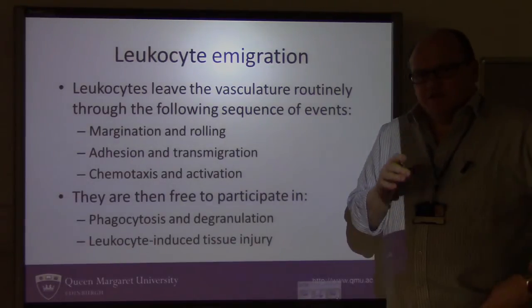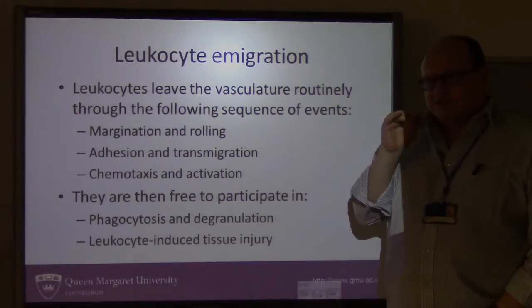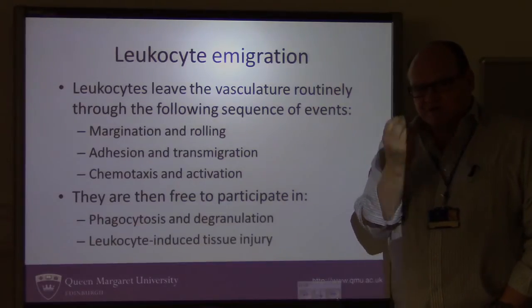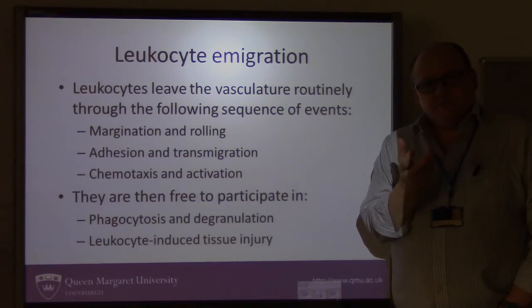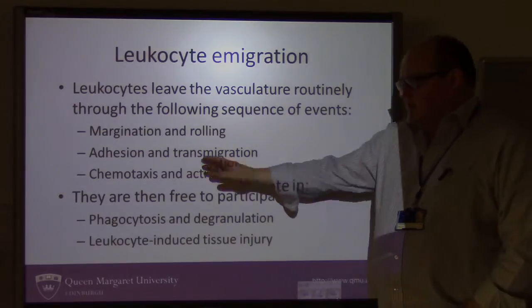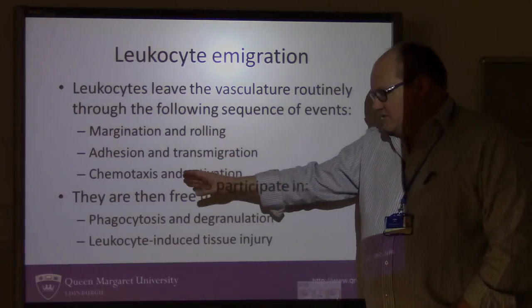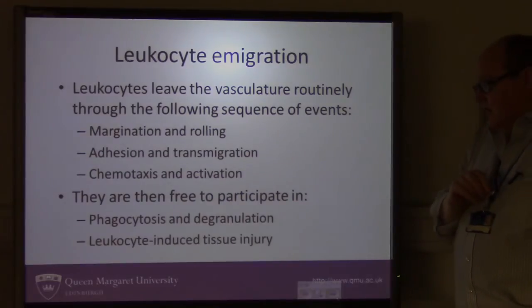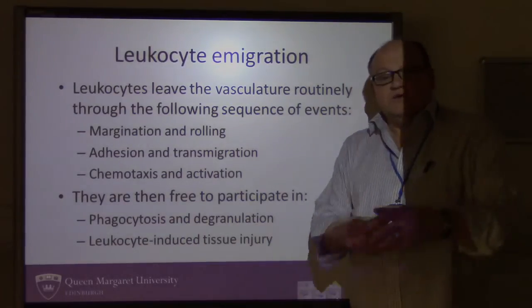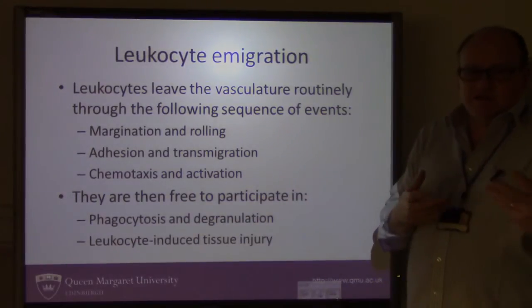The other thing that happens is leukocyte emigration — that's leukocytes leaving the blood vessel, passing through the blood vessel wall, and travelling to the site of the trauma, injury, or damage where the source of inflammation is. For that to happen, you need three processes: margination and rolling, adhesion and transmigration, and chemotaxis and activation. The leukocytes can then go through and start to phagocytose whatever is causing the irritation, degrade it, break it down, and address the tissue injury, which then needs to be repaired.